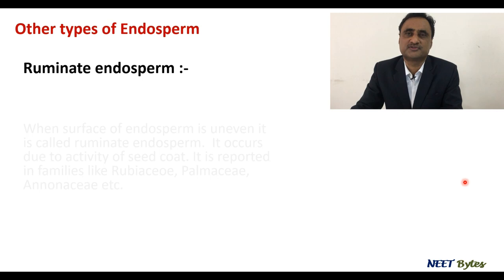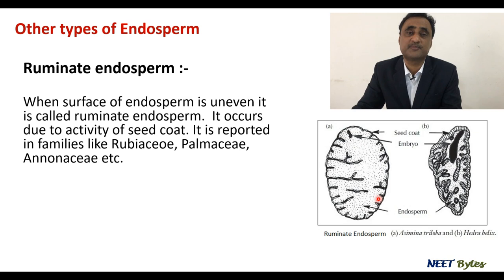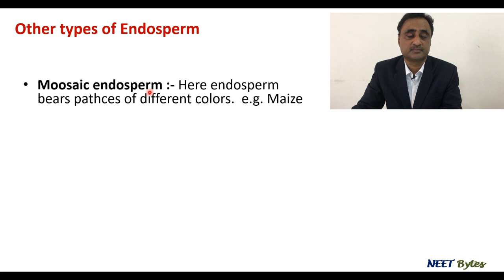Now let's talk about some other types of endosperm. In ruminate endosperm, the surface is uneven. This happens due to the activity of the seed coat — the seed coat creates some intervention, making the surface uneven. Ruminate endosperm is readily found in families like Rubiaceae, Palmaceae, and Annonaceae.